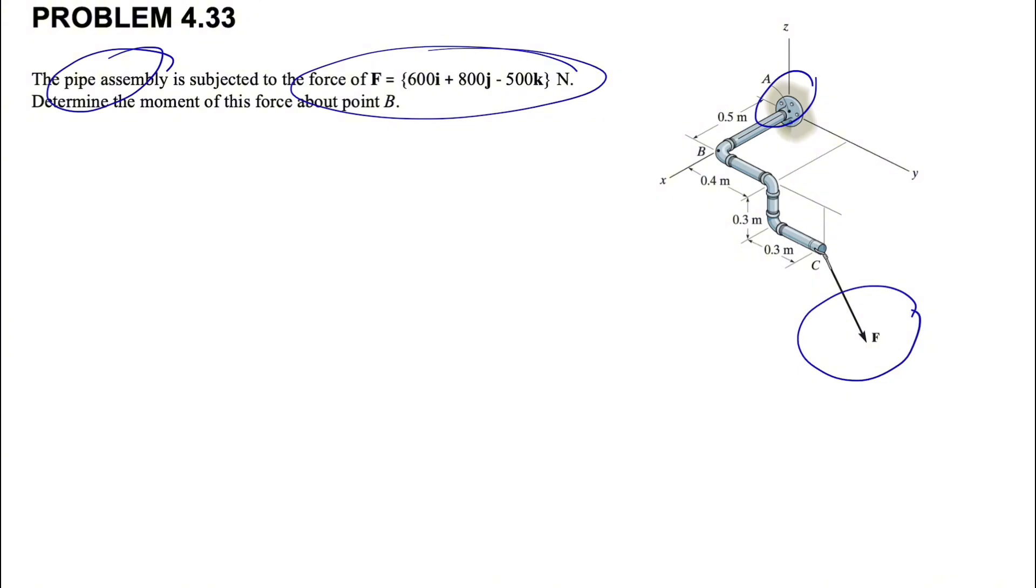So what we are trying to find in this question is finding the moment about point B. And we know the moment will be the cross product of distance vector or position vector, and the force.